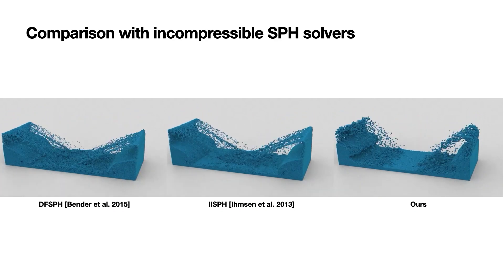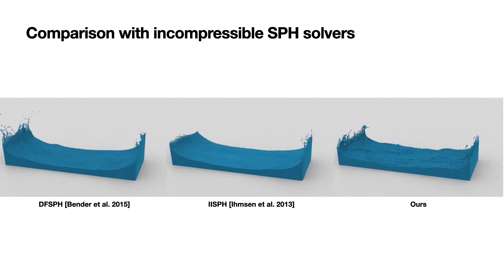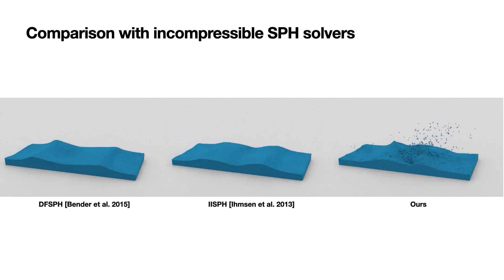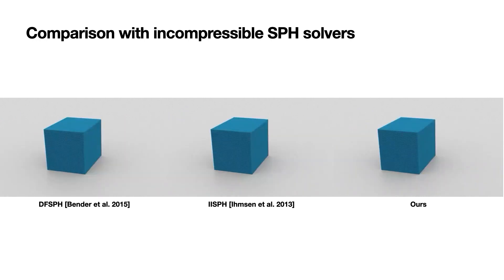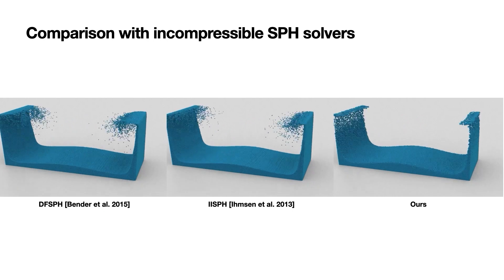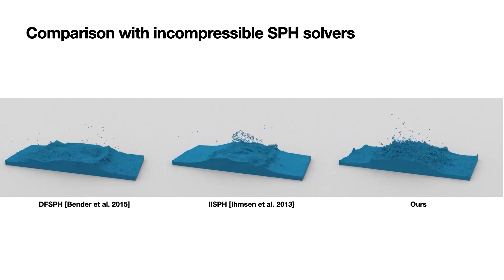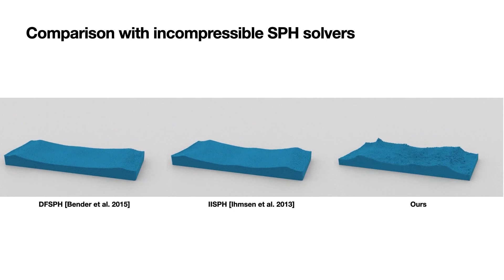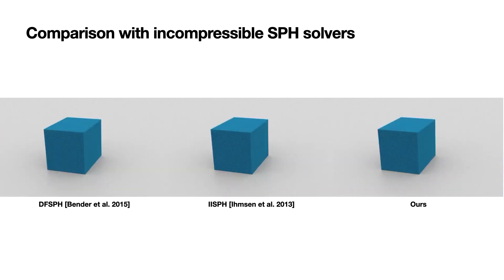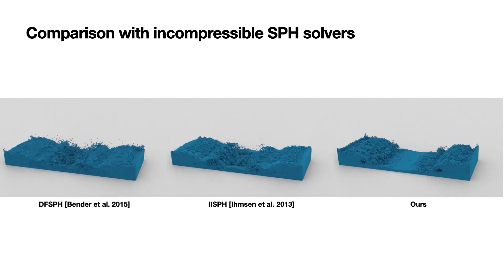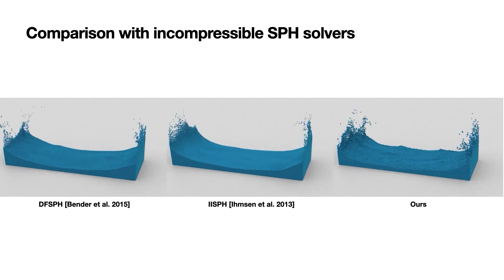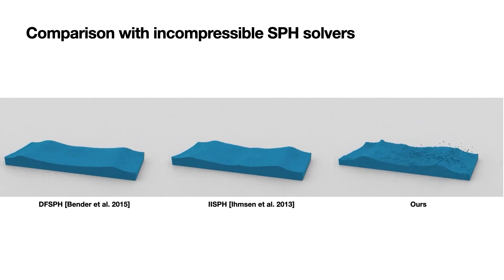Next, we compare our method with several popular SPH fluid solvers and a state-of-the-art solid-fluid coupling method. DFSPH and IISPH focus on incompressible fluids. Though their formulations strictly enforce incompressibility, they don't have a general potential energy form and thus cannot be applied to optimization time-stepping frameworks. While we treat fluids as weakly compressible, our method can simulate stable fluid dynamics without visually evident volume loss and enjoys the advantage of easy coupling.